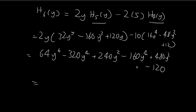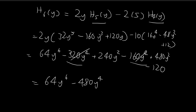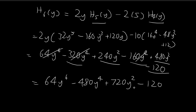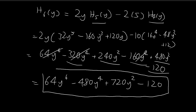Combining all the terms: we have 64y to the power of 6, then the y to the power of 4 terms combine to give minus 480y to the power of 4, the y squared terms combine to give 720y squared, and finally we have minus 120. So h6 of y equals 64y to the power of 6 minus 480y to the power of 4 plus 720y squared minus 120.